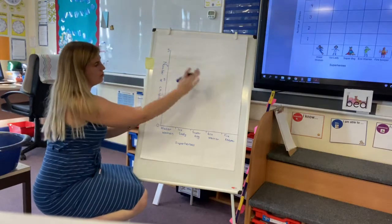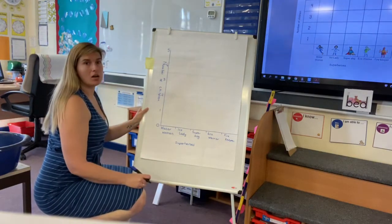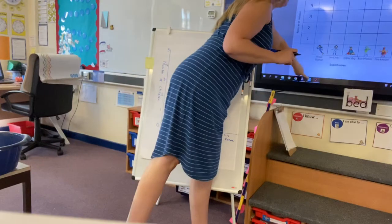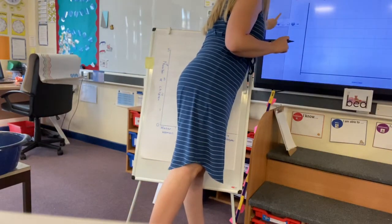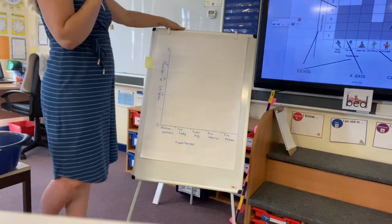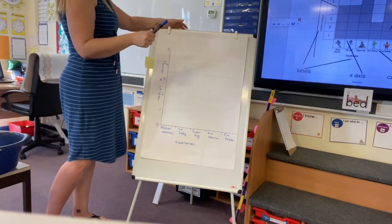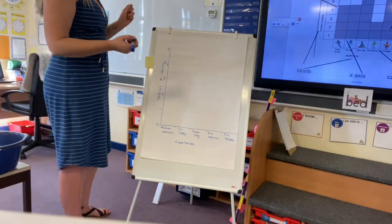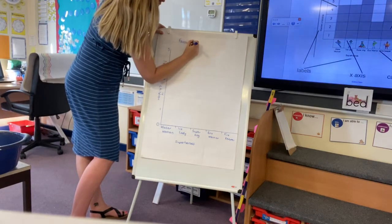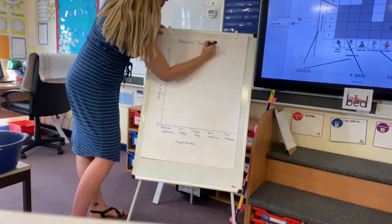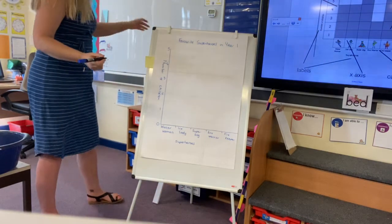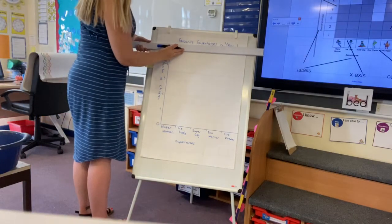We've nearly done everything on our block graph before we start filling it in. There's one thing I haven't done yet — if you remember when I pointed out what should be on a block graph, there's one thing missing. Can you think what it is? That's right — it's the title. And the title, as long as it explains what your graph is for, that's fine. I'm going to call it 'Favourite Superheroes in Year One.' And because it's our title, we can underline that — yes, with a ruler.